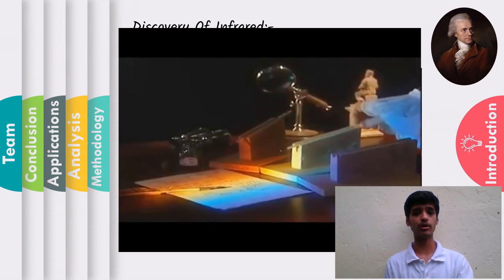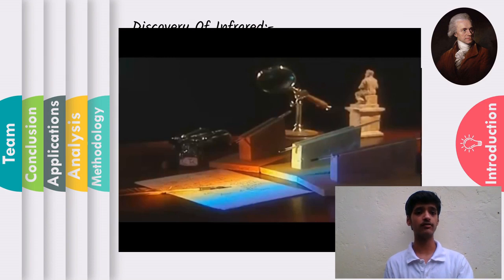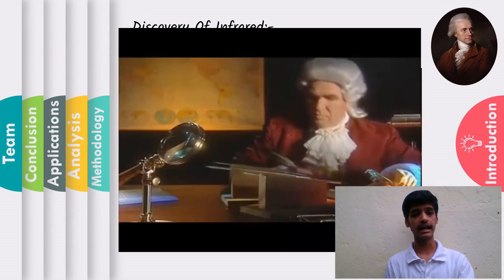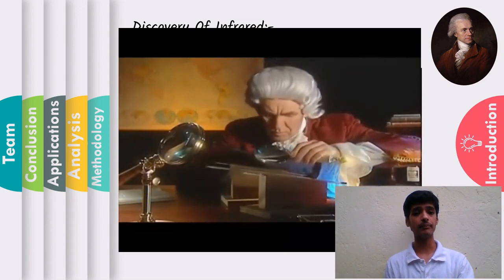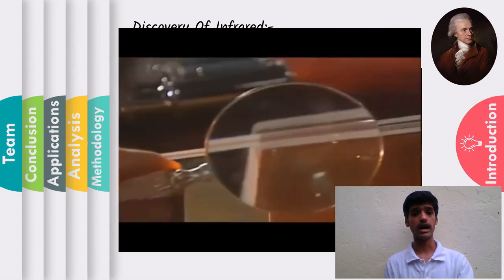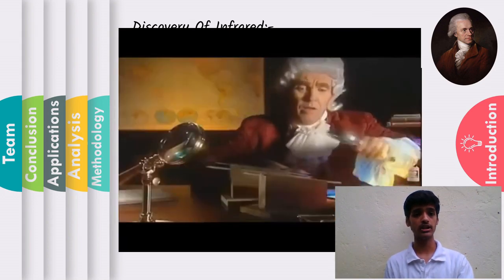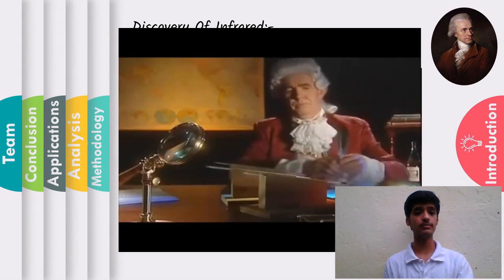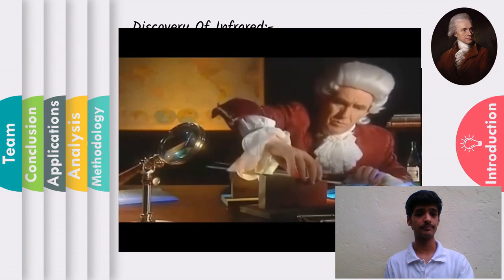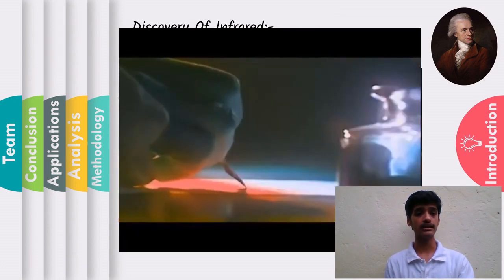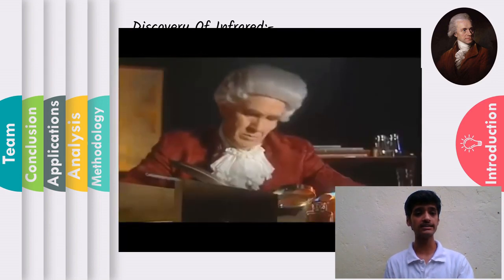Herschel used three thermometers for each color of the spectrum. When he measured the temperatures of the colors — violet, blue, green, yellow, orange, and red — he noticed that the temperature was increasing from violet to red. After making this observation, Herschel decided to measure the temperature just beyond the red portion of the spectrum where no sunlight was present. To his surprise, he found that this region had the highest temperature.